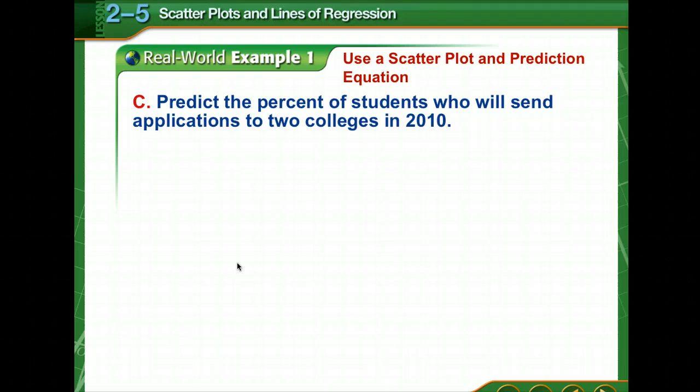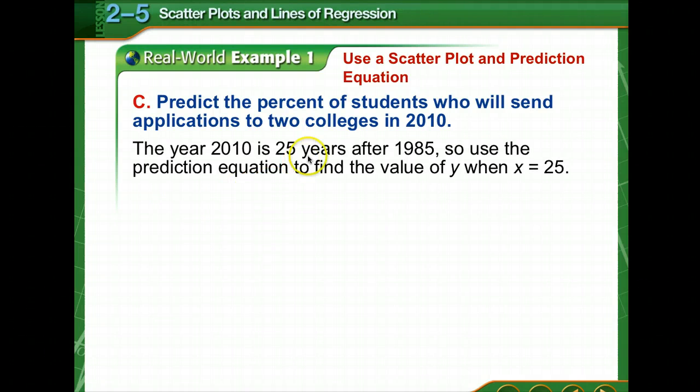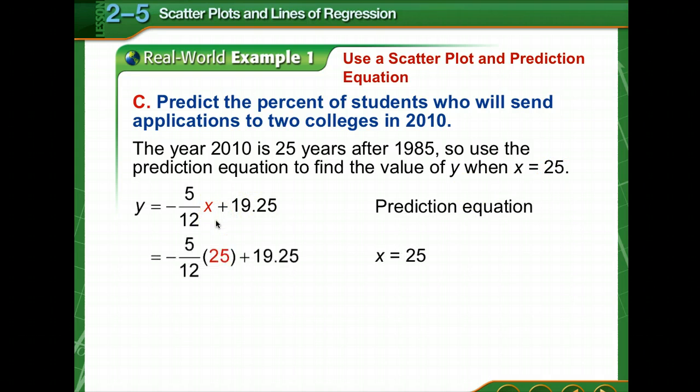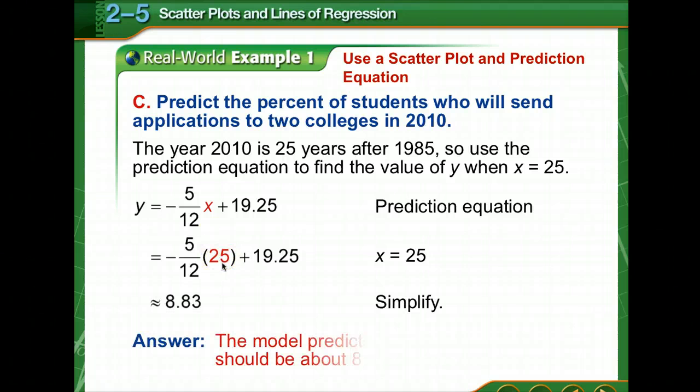So we're going to predict the percent of students who will send applications to two colleges in 2010. So 2010 happens to be 25 years after 1985. So when we use the prediction equation to find the value of y, we're going to show that x is 25. So using our prediction equation, substitute in a 25 and simplify. So it's approximately 8.83% is what our model indicates.